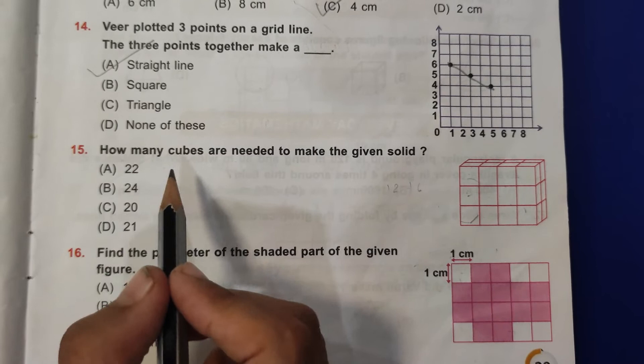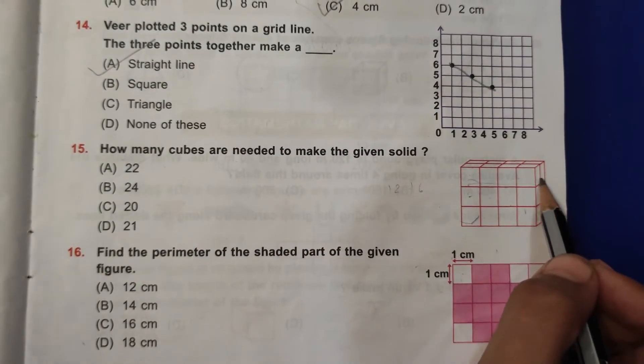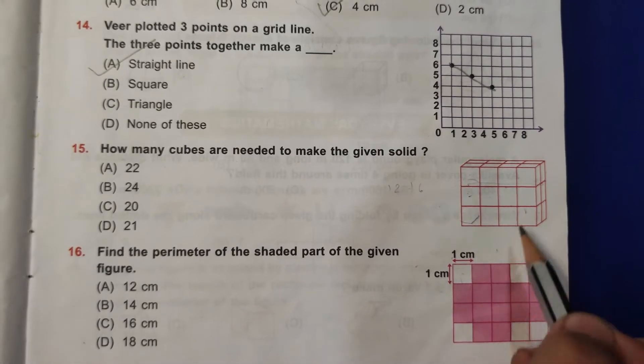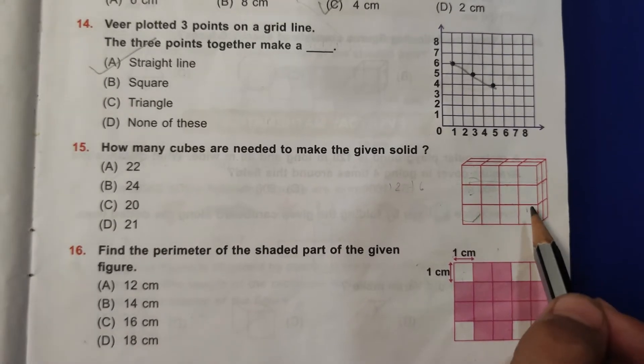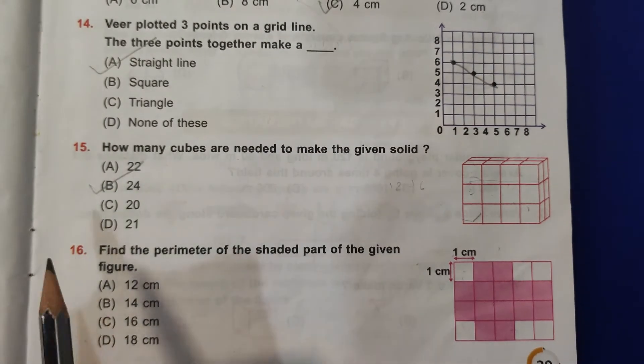Fifteenth question: how many cubes are needed to make the given solid? So here are 4 and here are 2. So 4 times 2 is 8. And here are 3 layers, so 8 times 3, that is 24. So B, 24 is the correct answer.